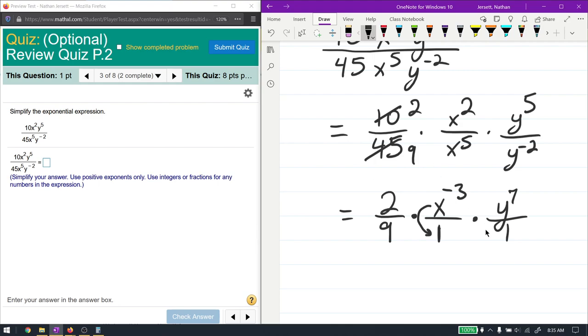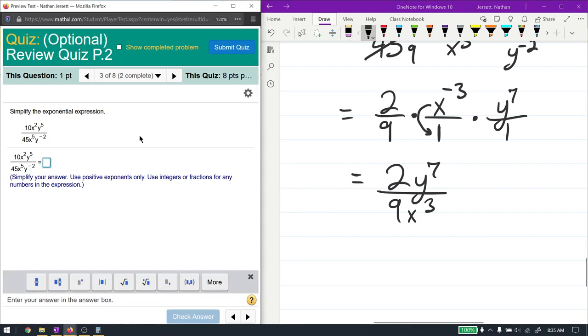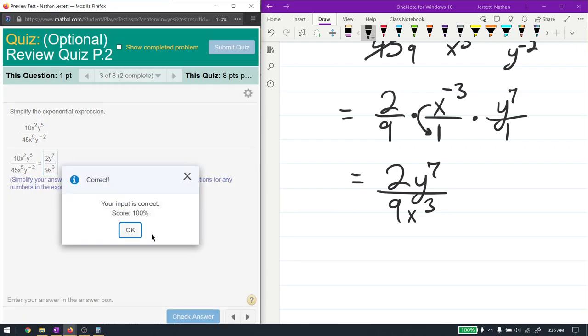So in total, or as the final answer, I should say, we have 2, y to the 7th is on top, on bottom we have 9 and x cubed, not x to the negative 3, x cubed. Once you flip it, that's when the negative goes away. That should be our final answer there, 2, y to the power of 7, over 9, x to the power of 3, and that's correct.